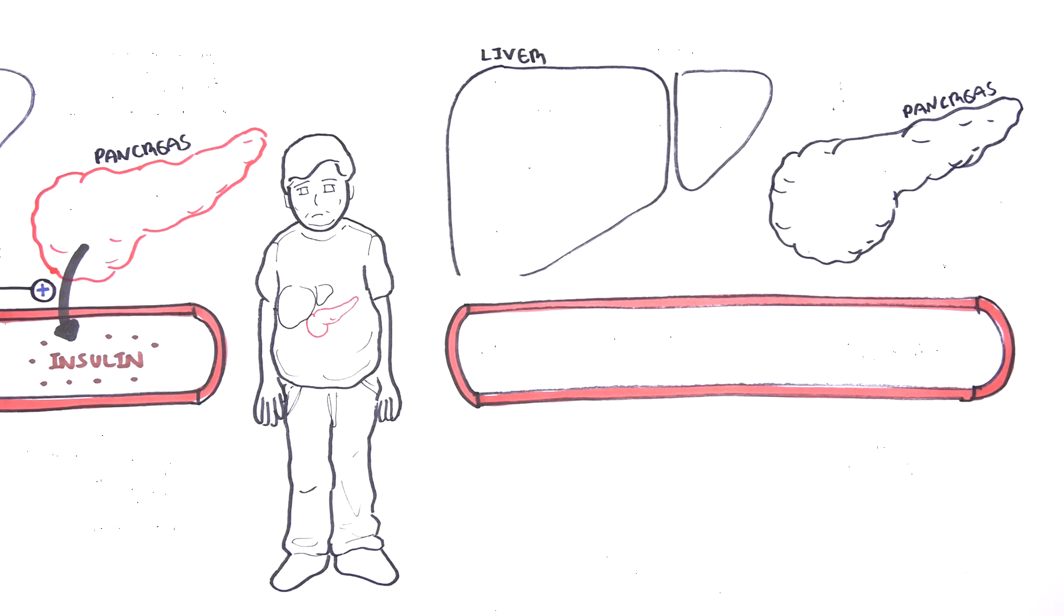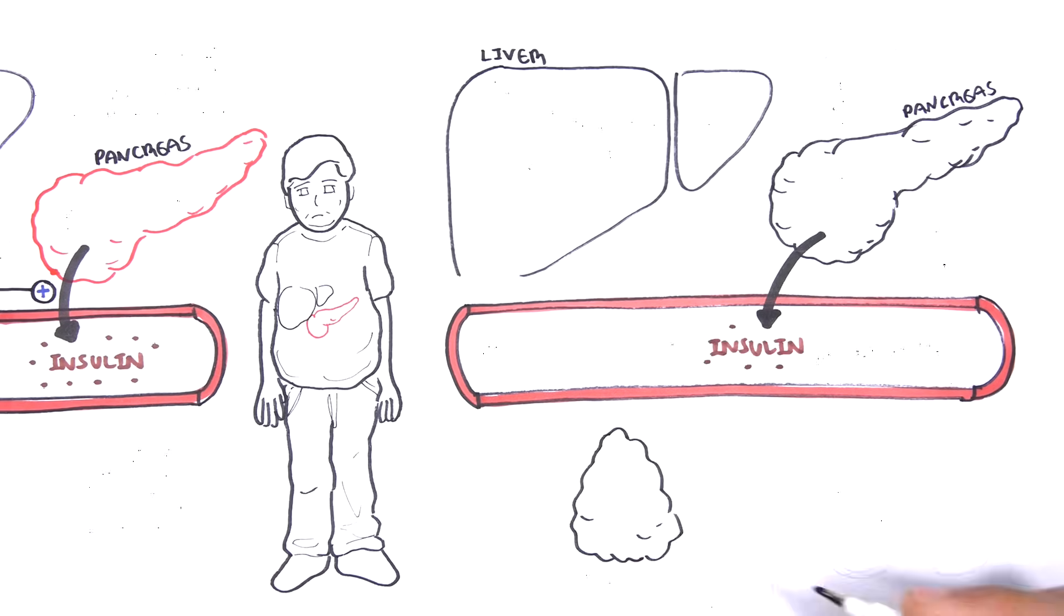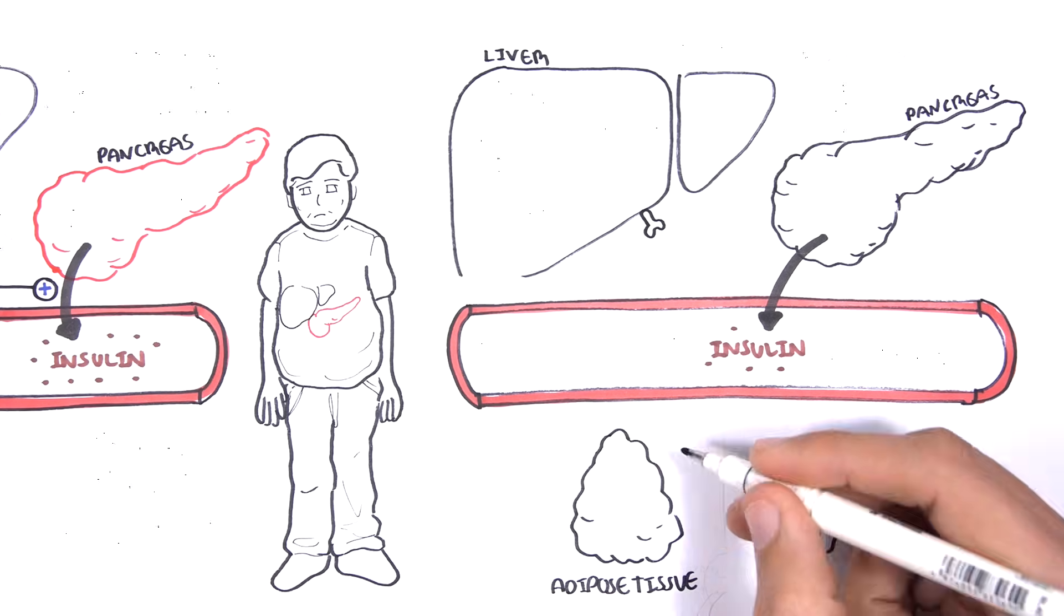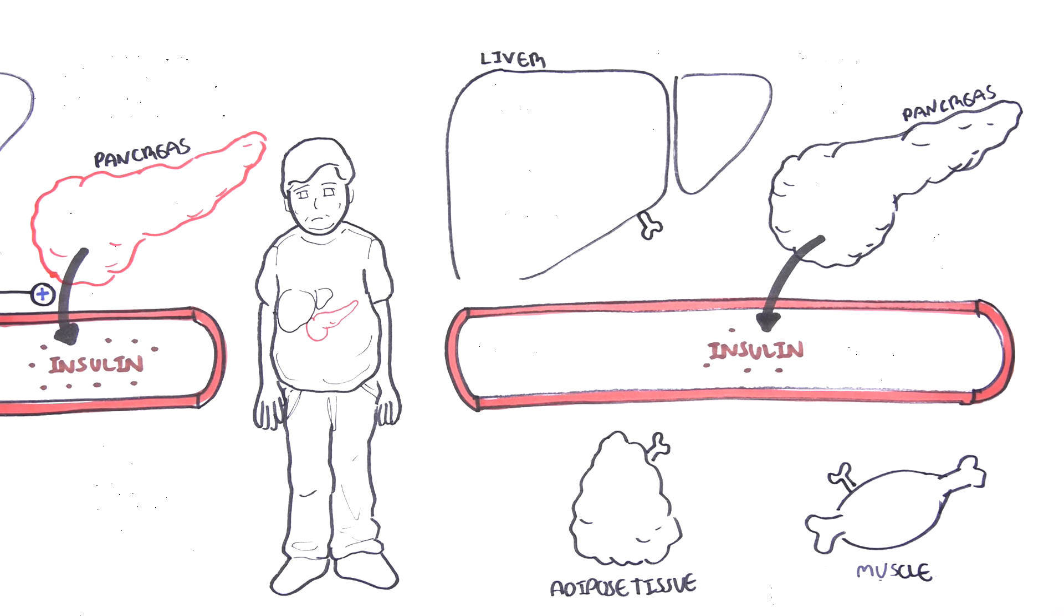The pancreas is the organ that produces insulin. And here is the adipose tissue, fat basically, and here are the muscle cells, skeletal muscles. And on these organs, on these cells of these organs, there are receptors for insulin.